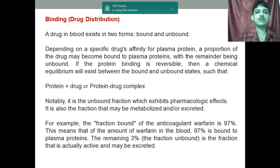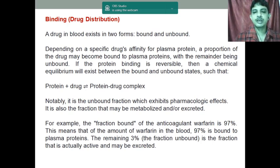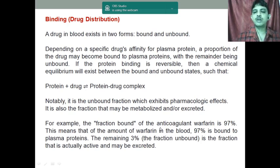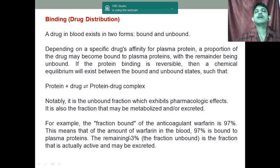For example, the fraction bound of the anticoagulant warfarin is 97%. That means after warfarin reaches the blood, 97% of it will bind to the plasma protein and the remaining 3% is present in the unbound form, which is actually active and may be excreted.